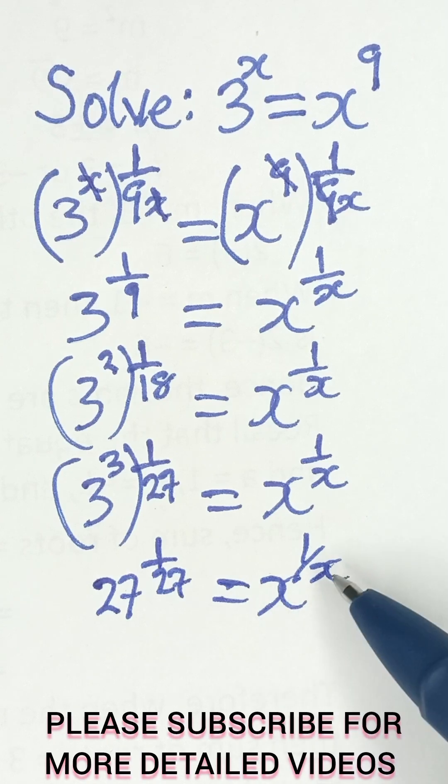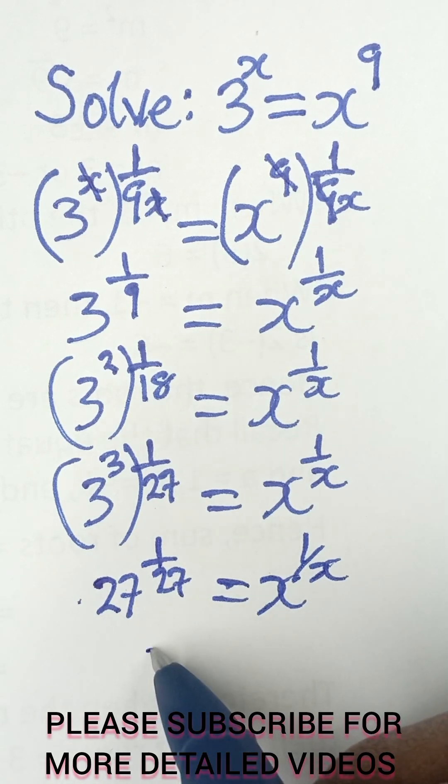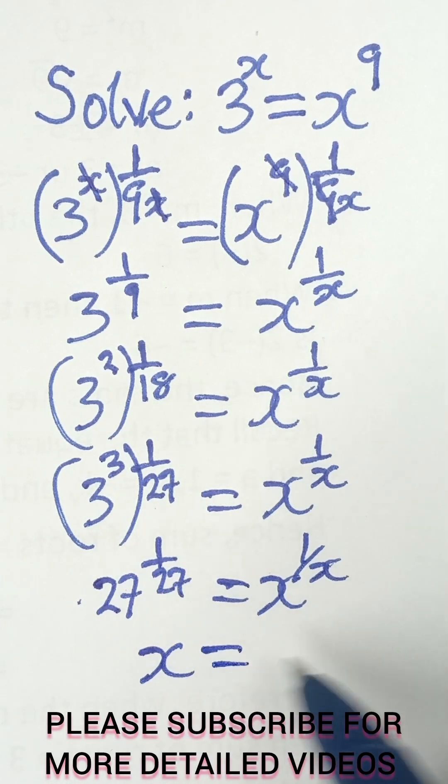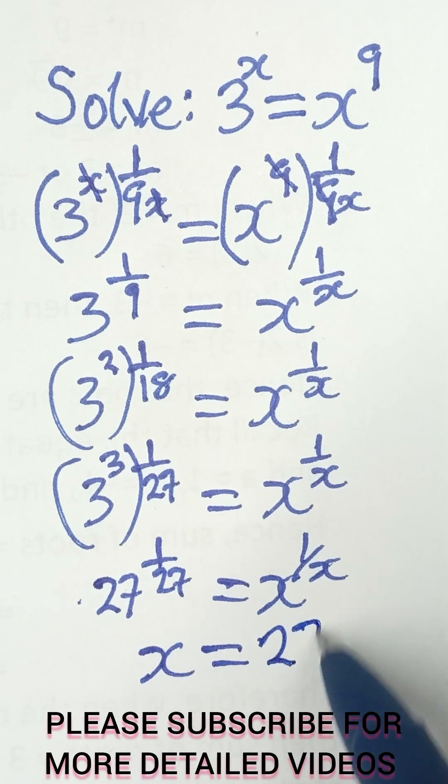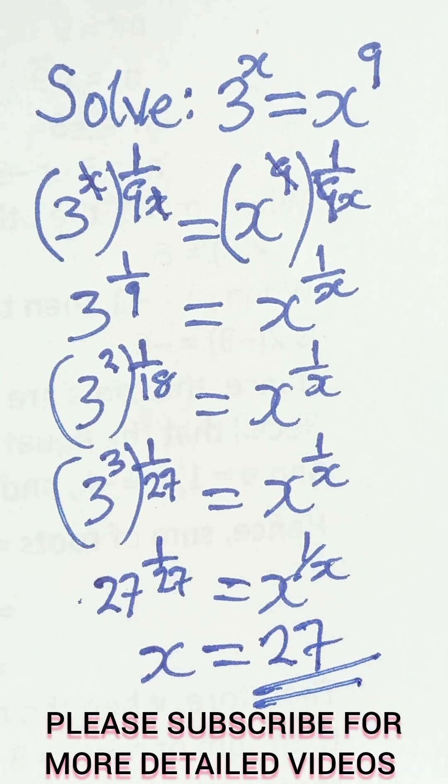Because this is 27, 27, this is x, x. So once we compare, we can now get the final answer that x is equal to 27 as the final answer.